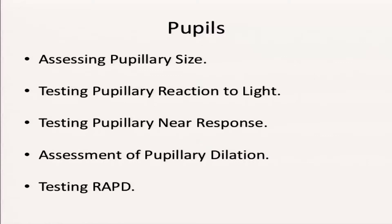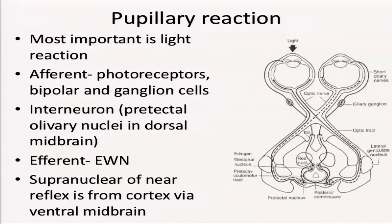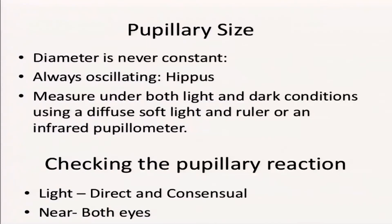Pupils are very important — the size of the pupils, their reaction to light, and the near response. You need to assess whether they can dilate properly, so you need to examine in a lit environment, in bright light, and also in a dark room. Always test the RAPD. The pupillary pathway starts from the retina, passes through the ganglion cells, and ends through the olivary nucleus to the Edinger-Westphal nucleus, where the efferent pathway originates. Any problem anywhere along this pathway will show up on pupillary examination.